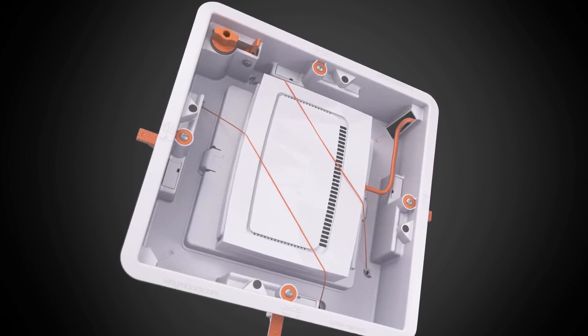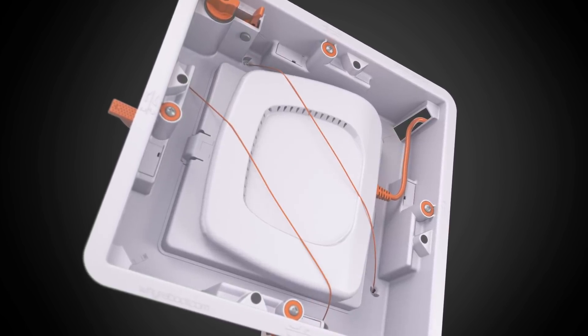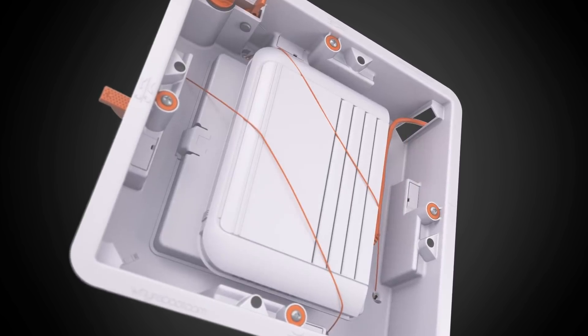This AP mount is made to securely fasten any size, shape or dimension of access point on the market equal to or smaller than the large Ruckus R720.